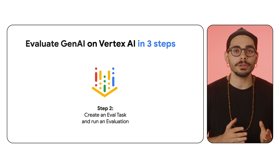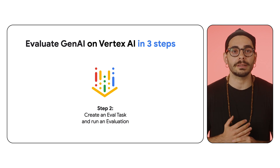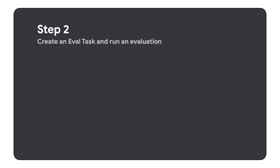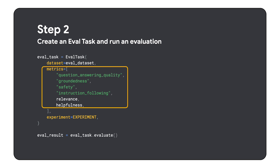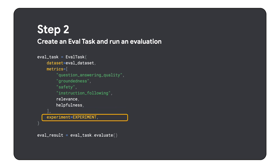After you collect your dataset and define your metrics, you can create an evaluation task and run the evaluation on Vertex AI. Evaluating your application is straightforward with the Vertex AI SDK for Python. Just feed your dataset and chosen metrics into an evaluation task, link it to your experiment, and run the evaluation. That's it.